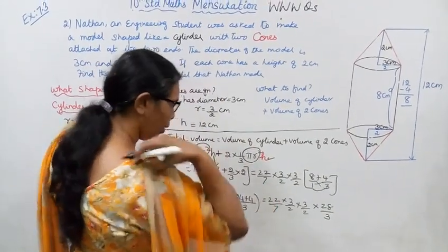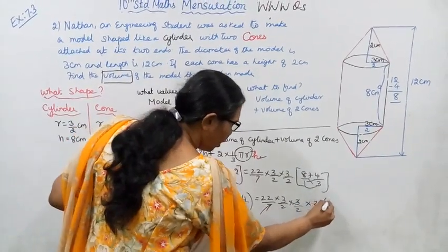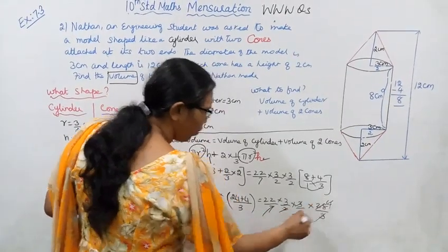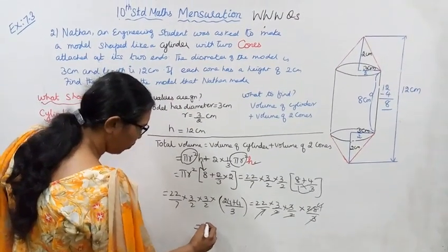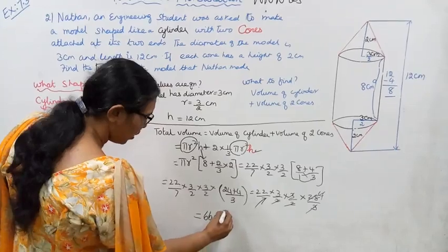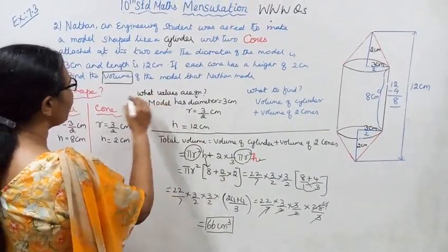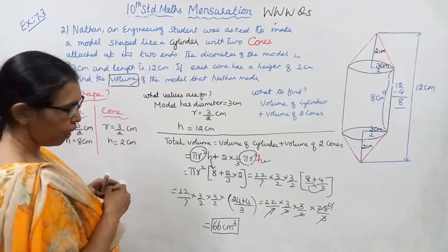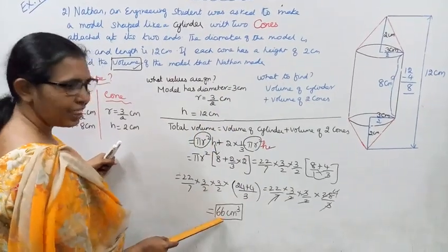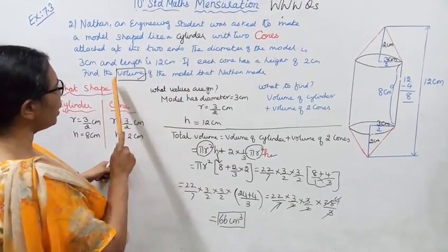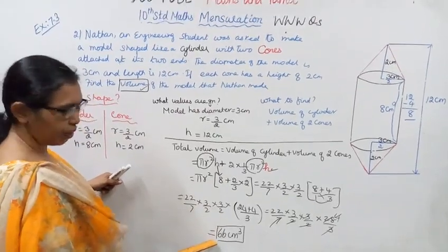Now we cancel: one 3 cancels with 3 in the numerator. 7 and 28 cancel to give 4. 22 divided by 2 gives 11, and multiplying gives the final answer. Volume of the model that Nadan made equals 66 cm³.